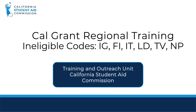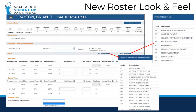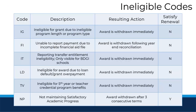Welcome to the Cal Grant Regional Training video. In this short training video we are going to discuss Cal Grant ineligible codes in more detail. You can find all adjustment and payment codes on the landing page of the roster by clicking on the information icon. In this video we will be focusing on these ineligible codes.